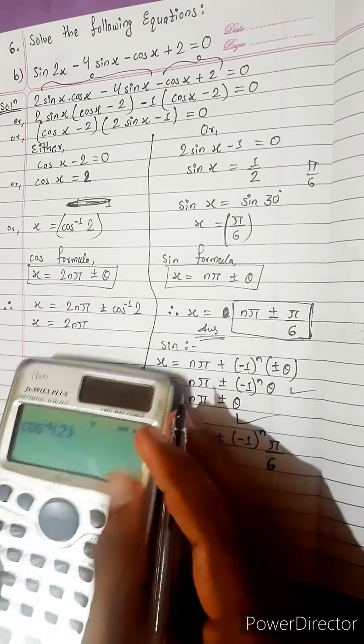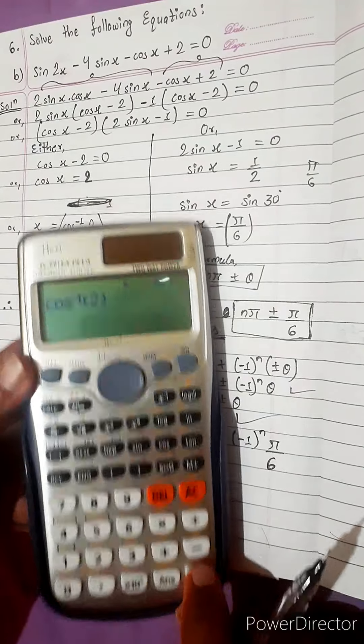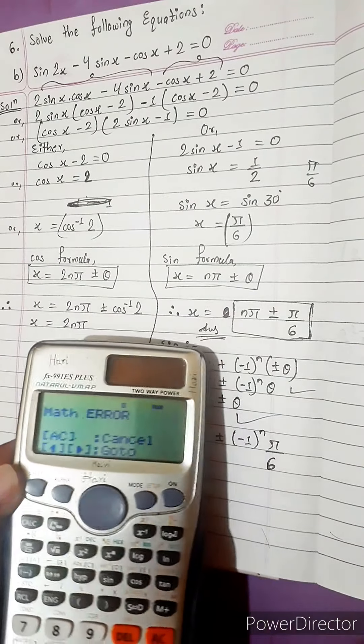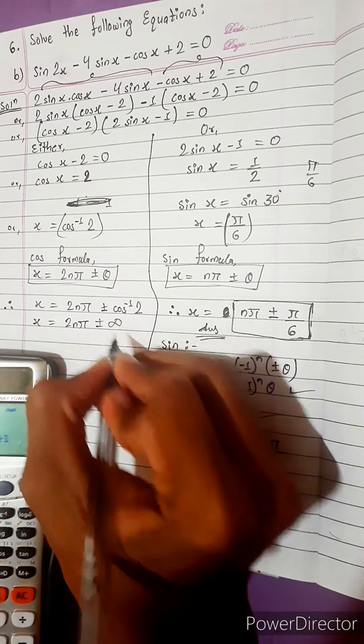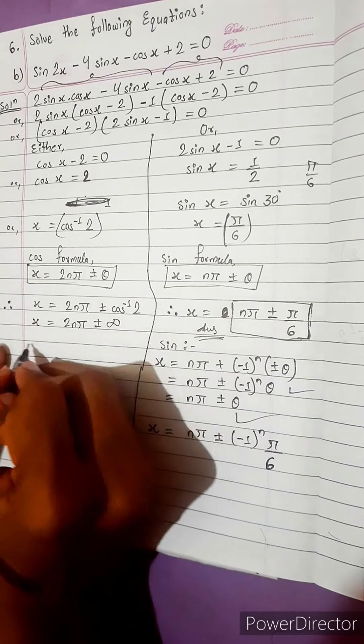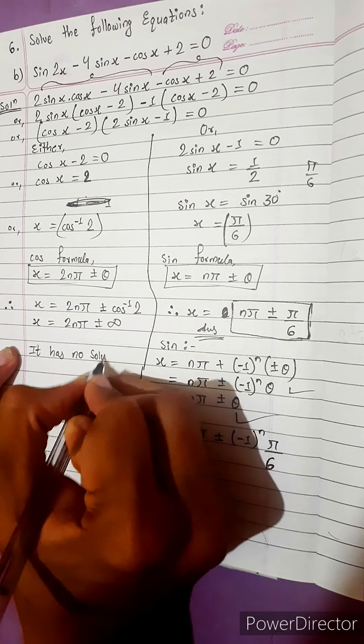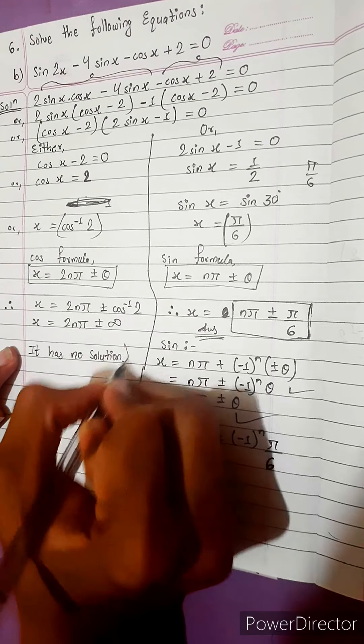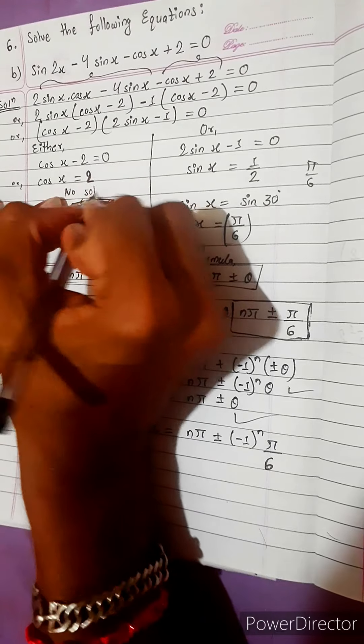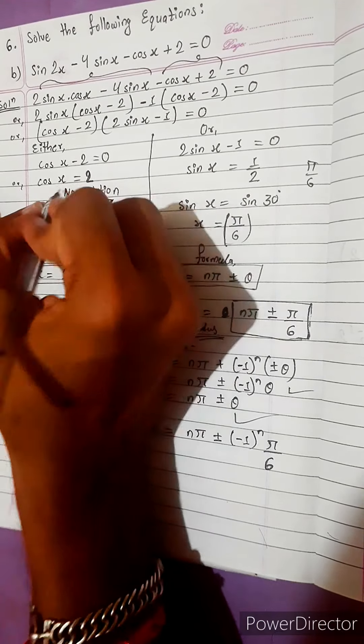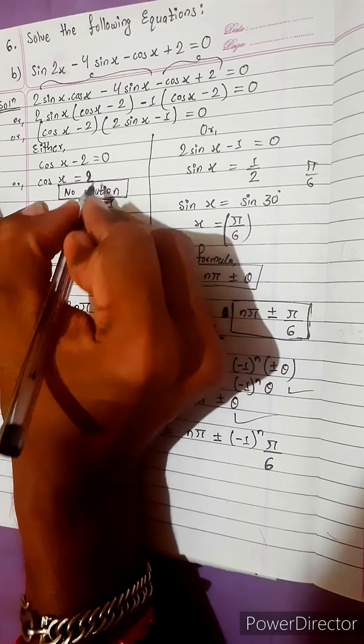And decide what I got is x equals to 2n pi. And look here, cos inverse 2 is how much. Cos inverse 2, and I press here is equal to, it will give math error. So it is undefined.